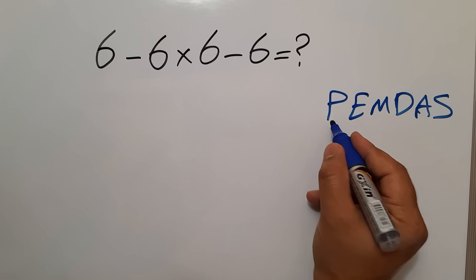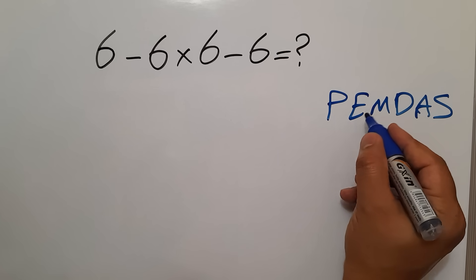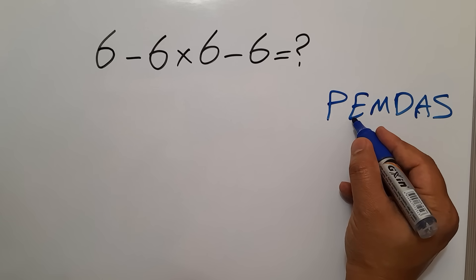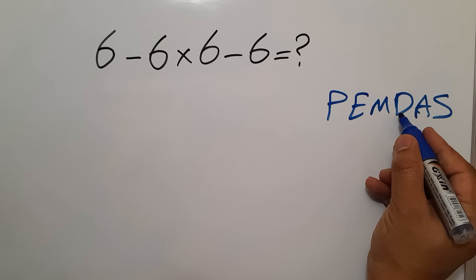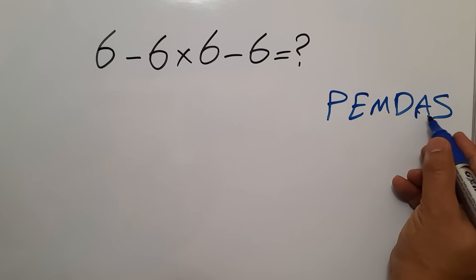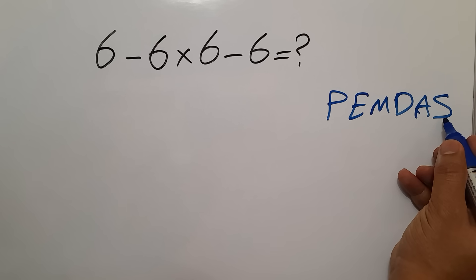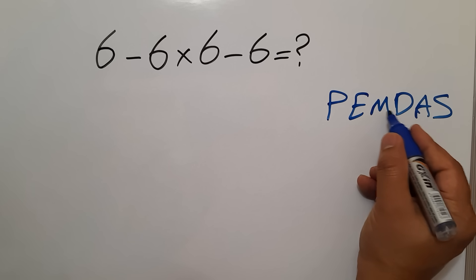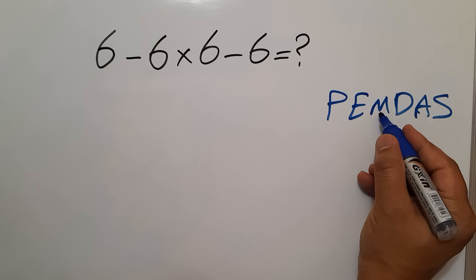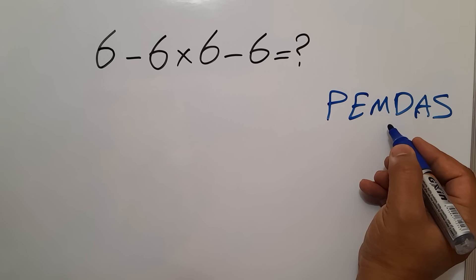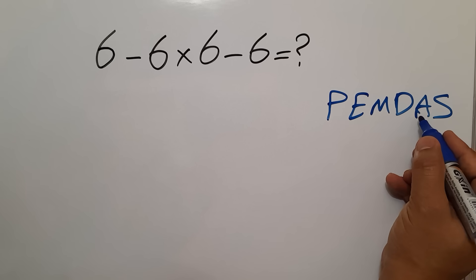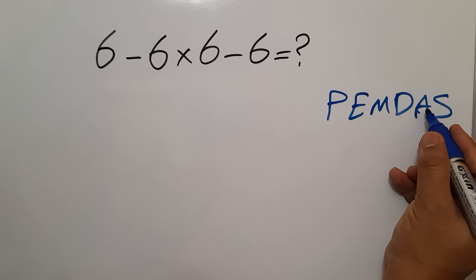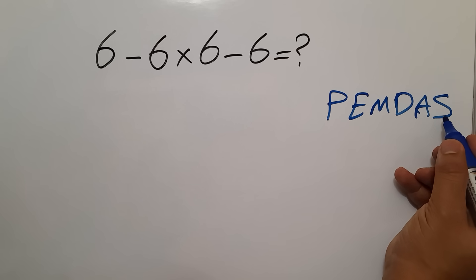We first do parentheses, then exponents, then multiplication and division, and finally addition and subtraction. Remember that multiplication and division have equal priority, and we work from left to right. The same applies to addition and subtraction.